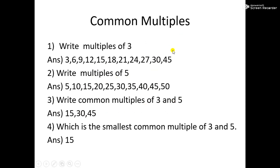Likewise, 30 is a common multiple of 3 and 5 because 30 is a multiple of both 3 and 5, so we write 30 under common multiples. Likewise, 45 is a multiple of both 3 and 5, so it is again a common multiple of 3 and 5. The next question is: which is the smallest common multiple of 3 and 5? Among 15, 30, and 45, the smallest is 15. So the answer will be 15 — 15 is the smallest common multiple of 3 and 5.